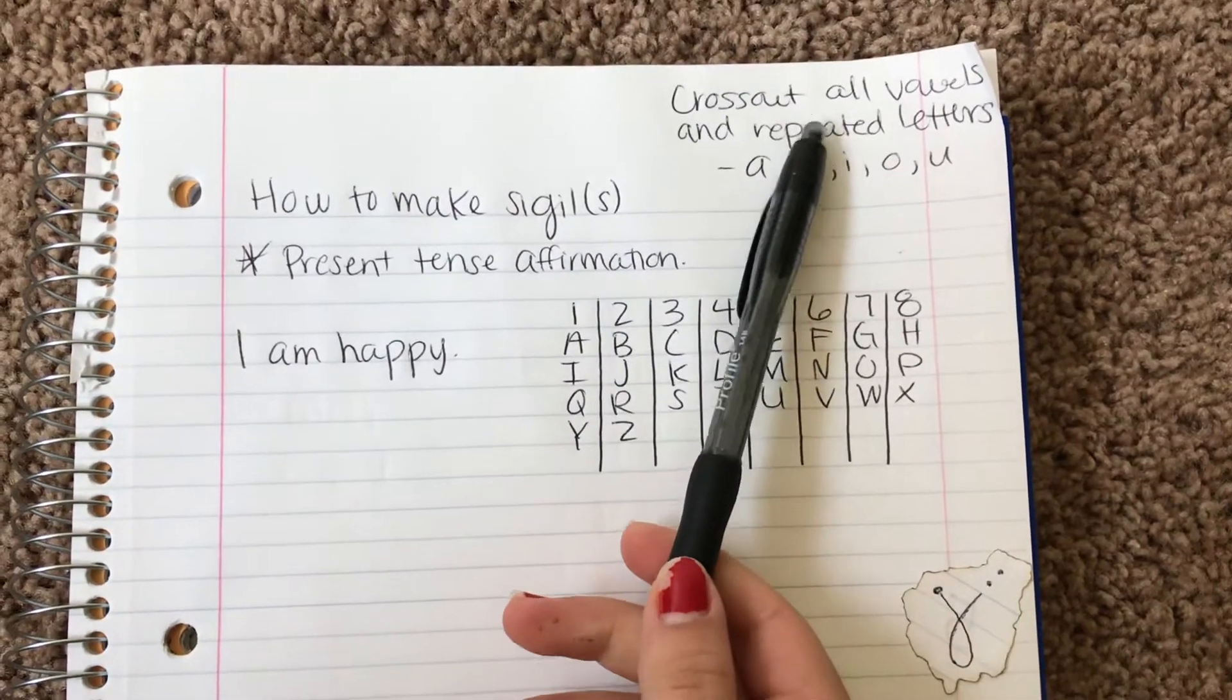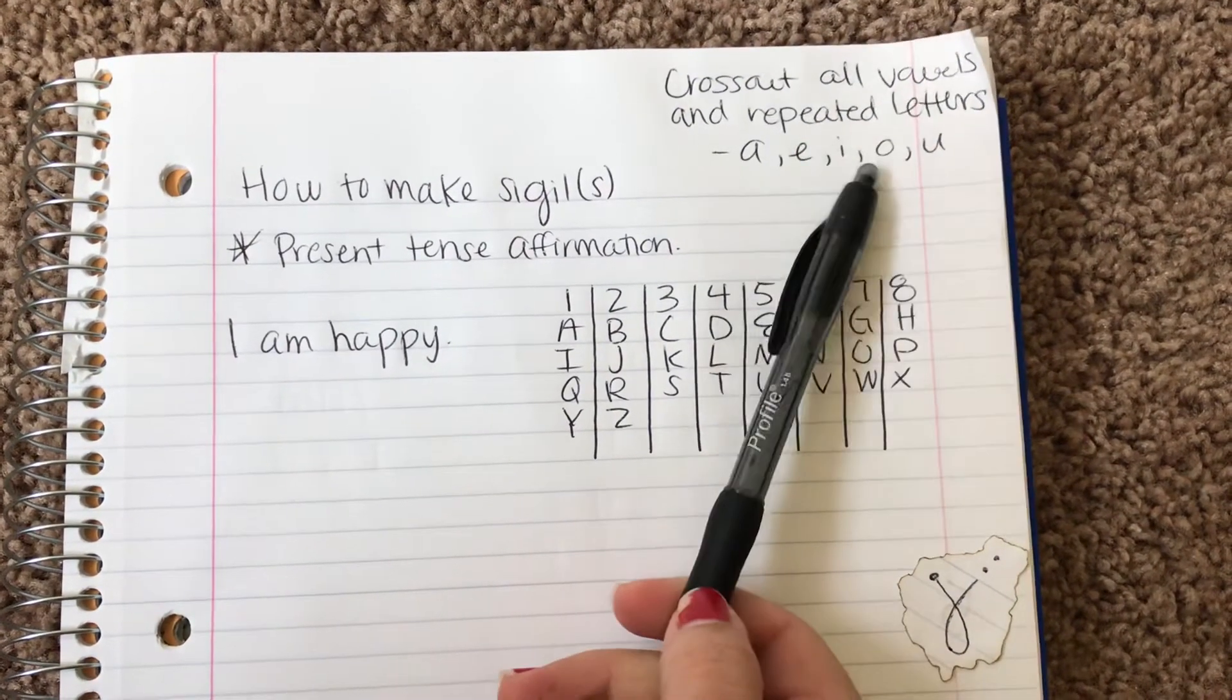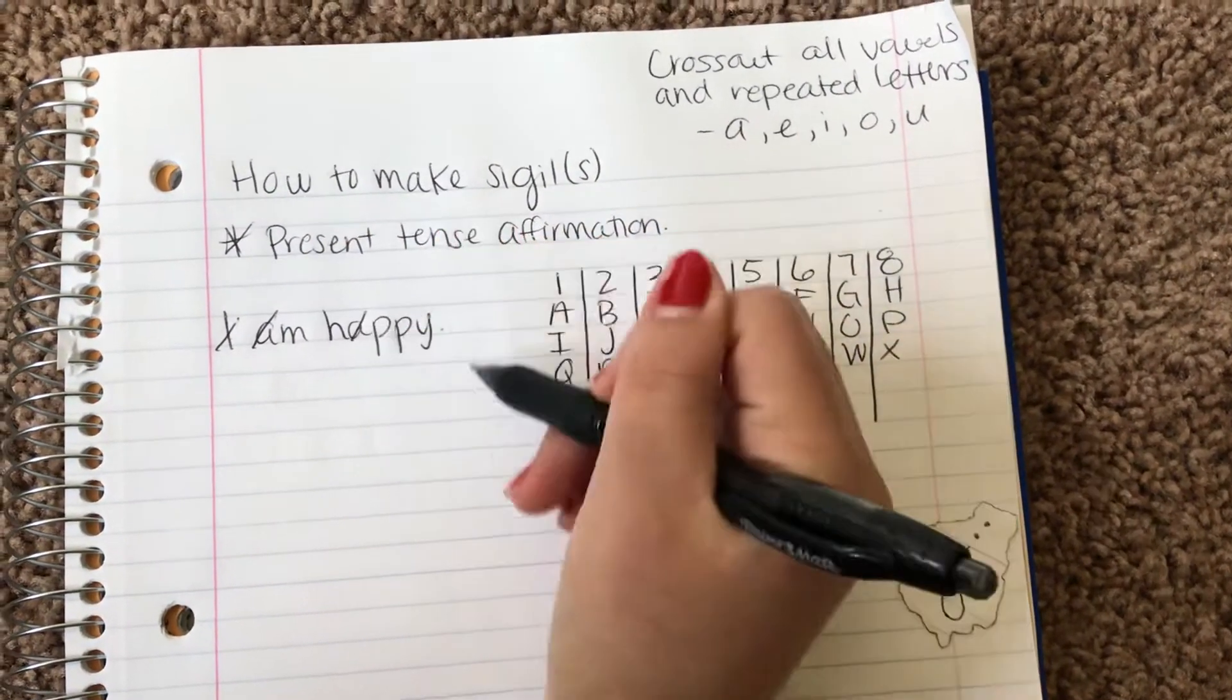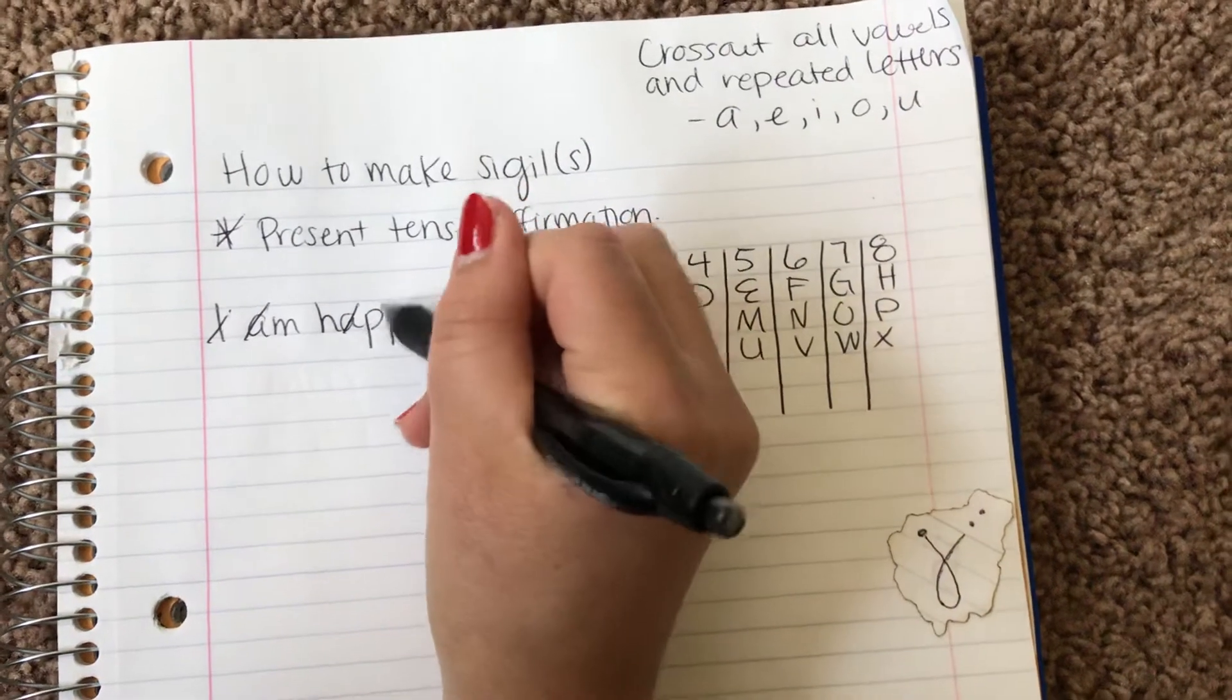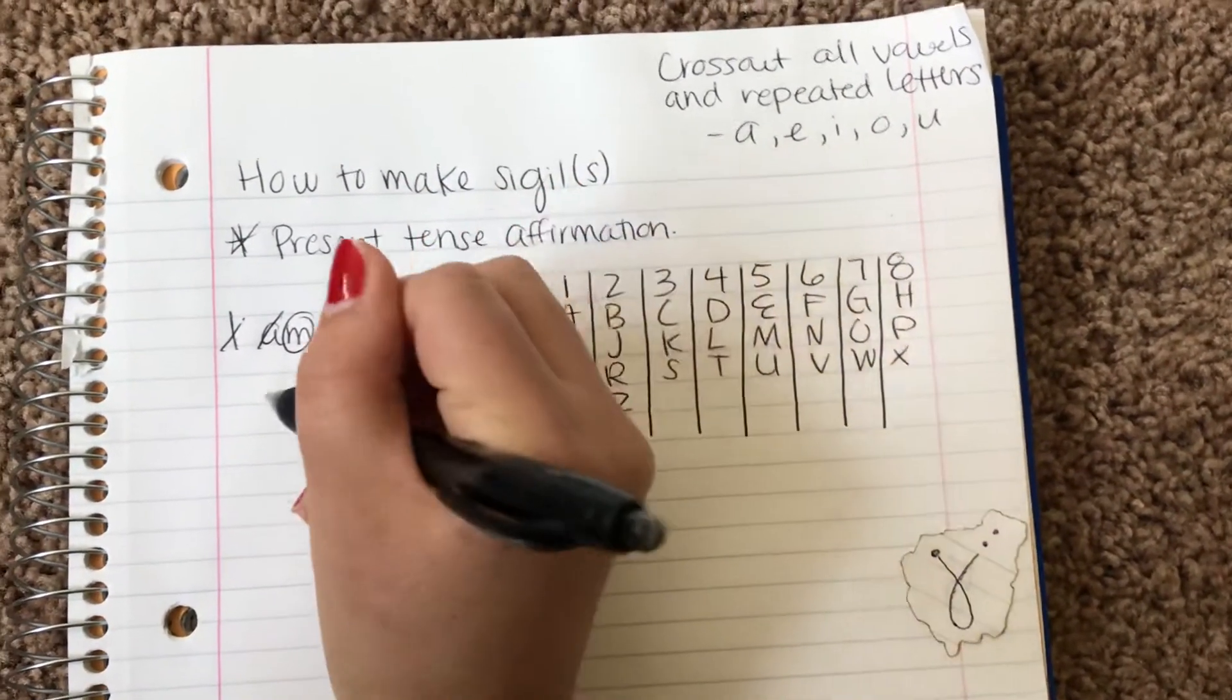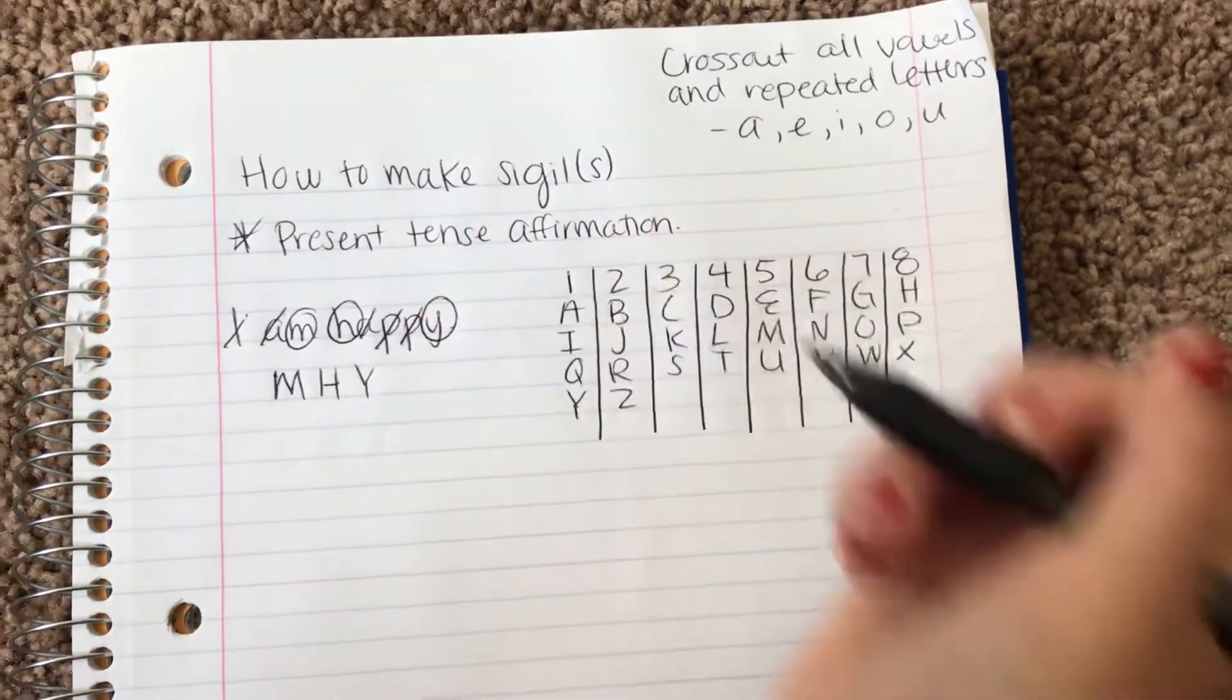Okay, so you want to cross out all vowels and repeated letters. So we're going to cross them out. So I, A, A. And then because we have two Ps here, we're going to cross these out. So you're left with M, H, Y.